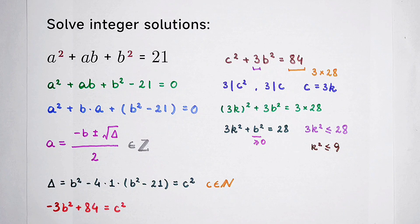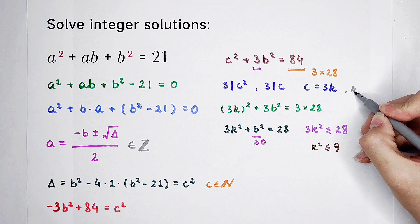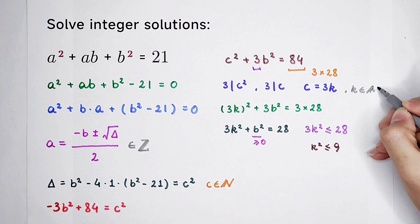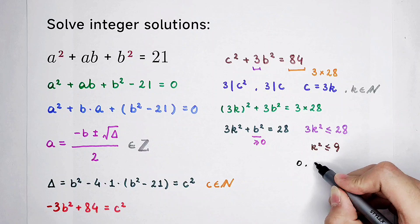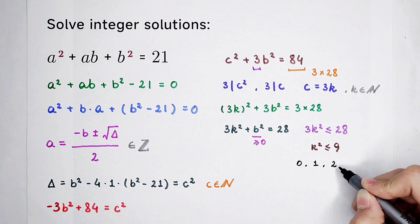Since k is also a natural number. So, write it here. k is natural. And then, there are only 4 cases. 0, 1, 2, and 3.